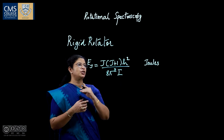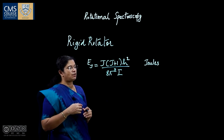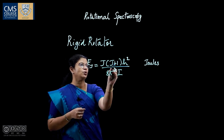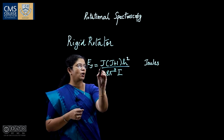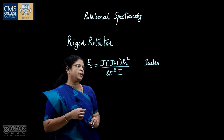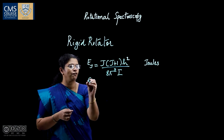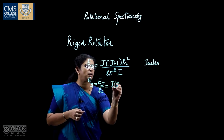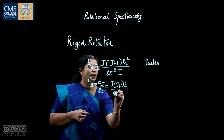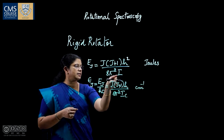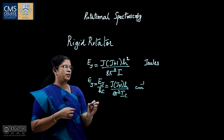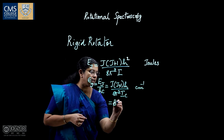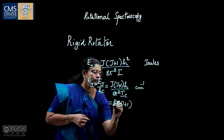To discuss the rotational energy levels of a rigid rotator, we use the quantum mechanical Schrödinger wave equation. The energy Ej equals J(J+1)·h²/(8π²I), where J is the rotational quantum number, h is Planck's constant, and I is the moment of inertia. In spectroscopy, we write this in terms of wave number: ε_J equals Ej/(hc), which reduces to J(J+1)·h/(8π²Ic) in units of cm⁻¹. Since h/(8π²Ic) is a constant, we denote it as the rotational constant B, giving ε_J equals B·J(J+1) cm⁻¹.